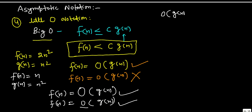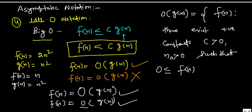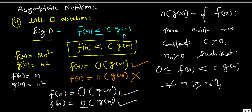Formally, little-o of g(n) is defined as the set of all f(n) such that there exist positive constants c > 0 and n₀ > 0 such that f(n) is always greater than or equal to zero and always strictly less than c·g(n) for all values of n greater than or equal to n₀.